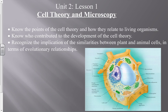We need to know who contributed to the development of the cell theory — there are only four names to remember, so it's not as bad as chem. We also need to recognize the implication of the similarities between plant and animal cells in terms of evolutionary relationships. If you look at a plant over by the window and then look at yourself, you'd say we don't have a lot in common — we're very different and don't do things the same way.